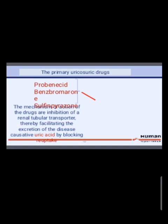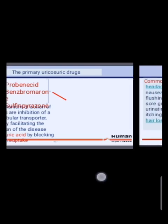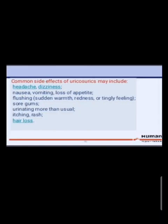The mechanism of action of uricosuric drugs involves inhibition of a renal tubular transporter, thereby facilitating the excretion of uric acid by blocking its reuptake. Common side effects of uricosurics may include headache, dizziness, nausea, vomiting, loss of appetite, flushing, sudden warmth, redness or tingly feeling, sore gums, urinating more than usual, itching, rash, and hair loss.